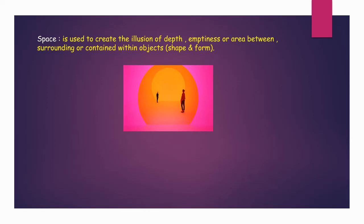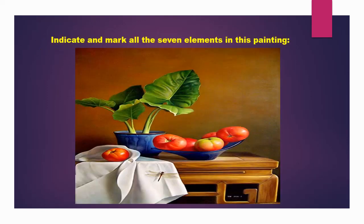Now to start, what you can do to practice these seven elements is look at this picture and indicate and mark all the seven elements in this painting. You will find line, shape, color, texture, value, form and space — all of these things in this one painting. In the same manner, at home you can grab any newspaper, any magazine, any home family photo album and work out all these seven elements that you have seen.